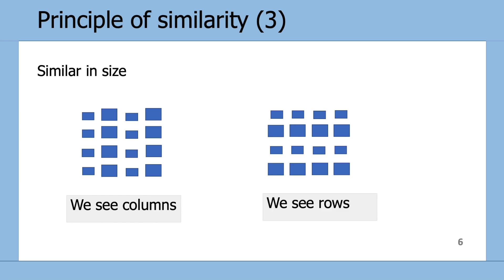Here is another example of the Principle of Similarity, this time using size. So on the left-hand side our eyes perceive the smaller boxes as columns, where on the right-hand side our eyes perceive the smaller boxes as rows.